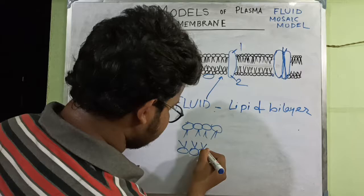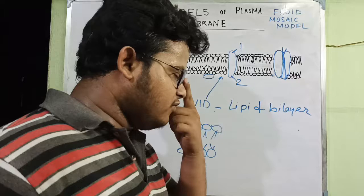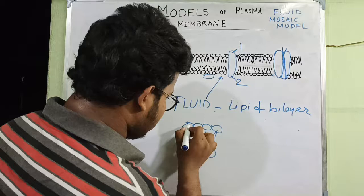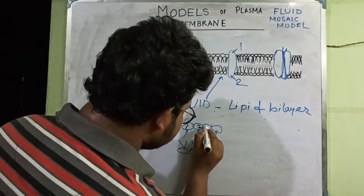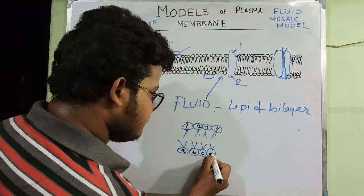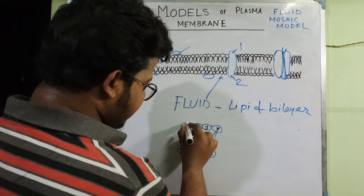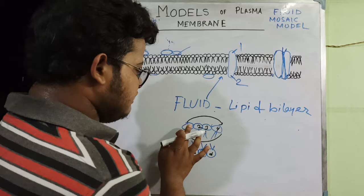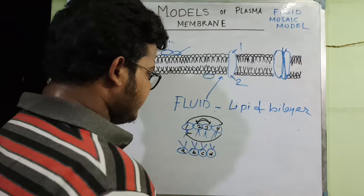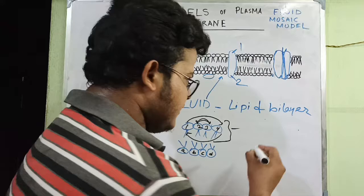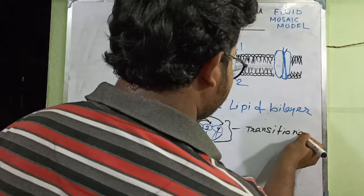To explain in a simplified way: suppose we have positions labeled 1, 2, 3, 4 in one layer and A, B, C, D in another layer. If position 1 can change to position 4, and 4 can move to 1, or 2 can exchange with 3 — this movement of individual phospholipids within a single layer of the lipid bilayer is known as transitional movement.